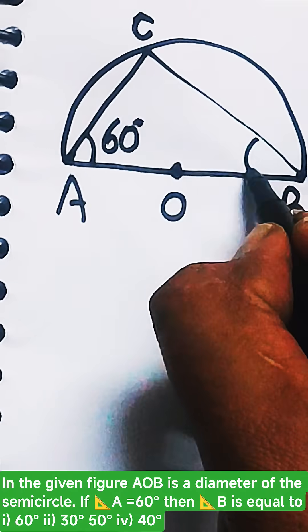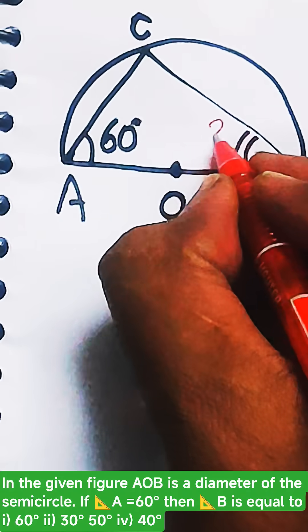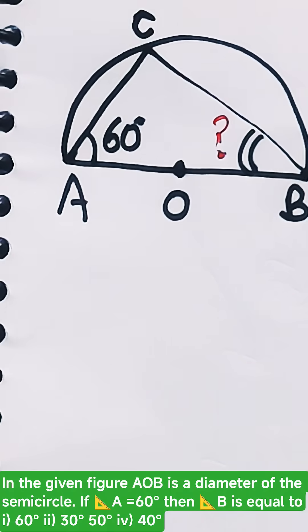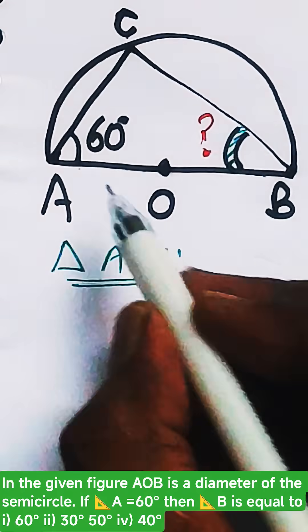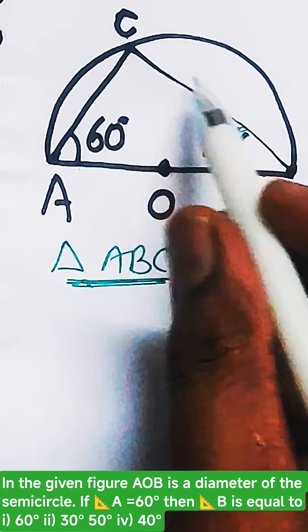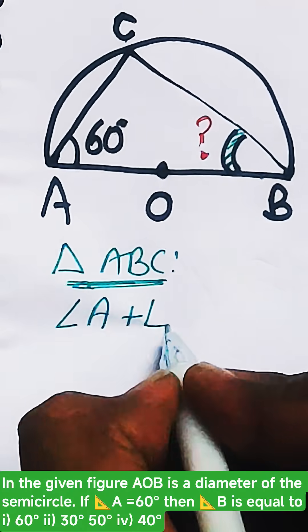ABC is a triangle, and the sum of all the angles of any triangle is equal to 180 degrees.